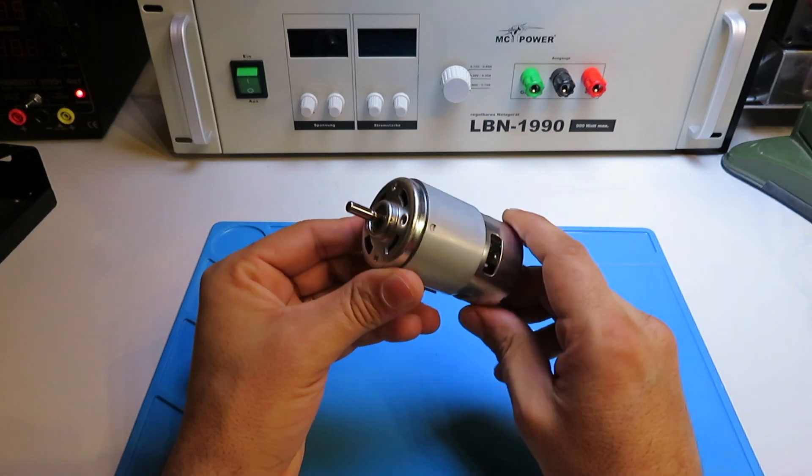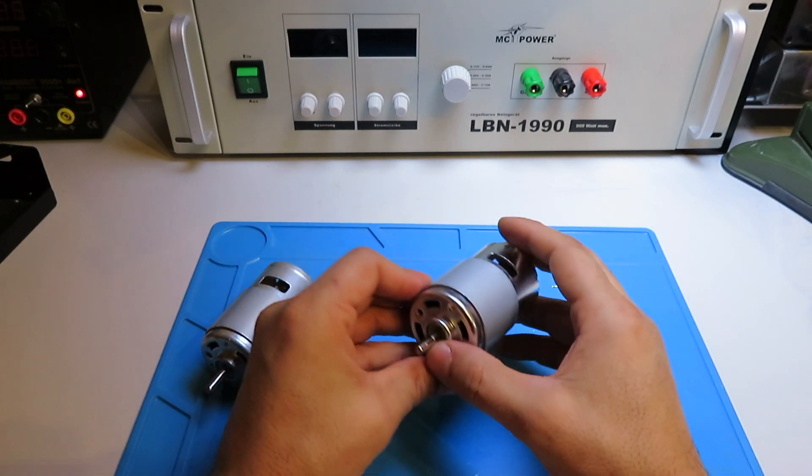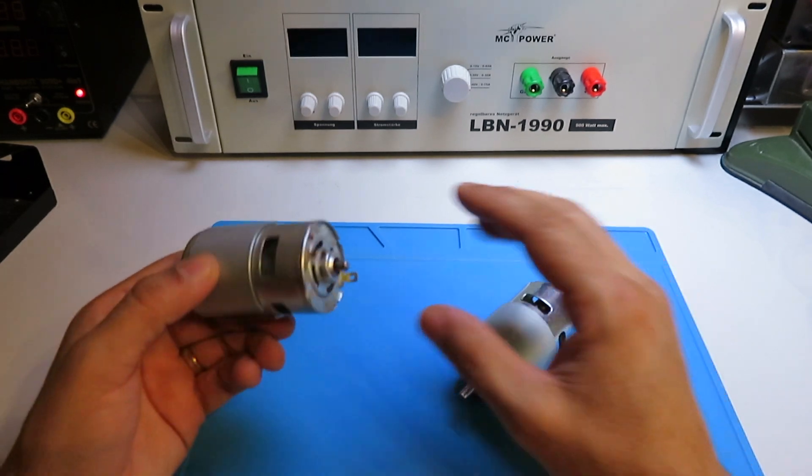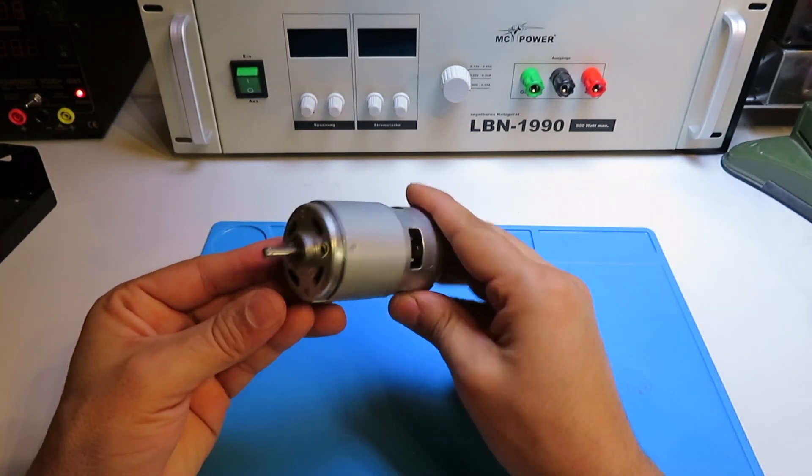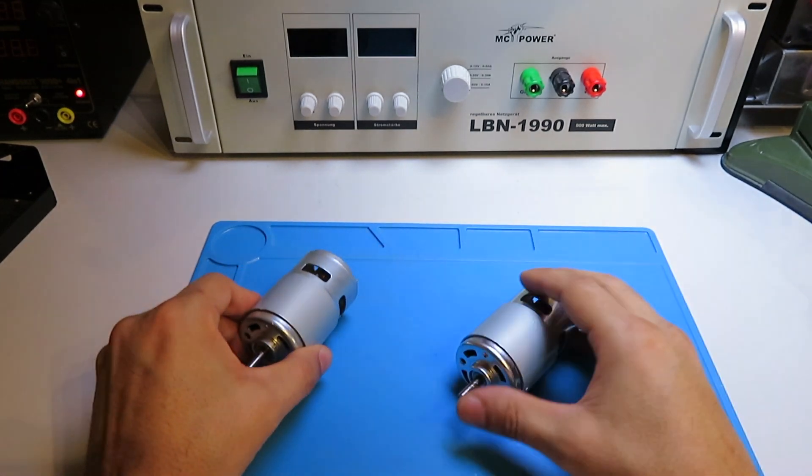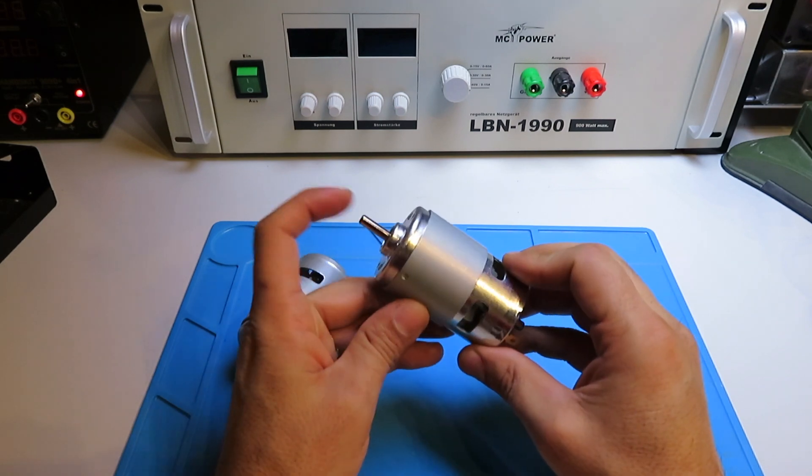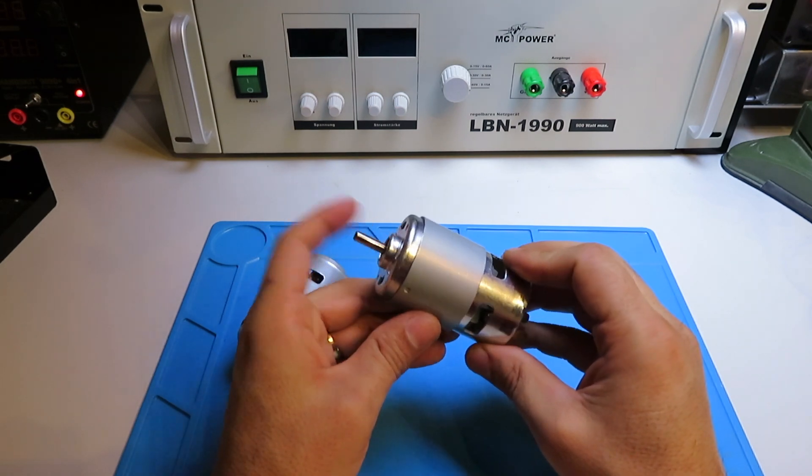This motor at 12 volts draws about 230-250 milliamps, and just for comparison this one draws 850 milliamps at 12 volts. So yeah, he asked me if I could measure the RPM for this one at 12 volts and 24 volts.